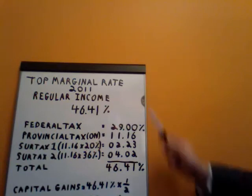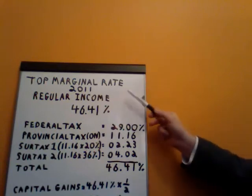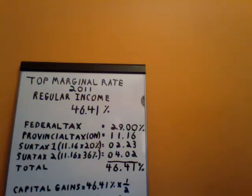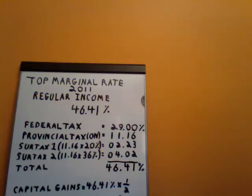As you can see, the top marginal rate for 2011 regular income is 46.41%. I'm going to show you how to build up to it. First we've got to have the federal tax. The top marginal tax rate for federal tax purposes in Canada is 29%. This kicks in when you've earned $128,801 in the 2011 year. Every additional dollar will be taxed at that amount.